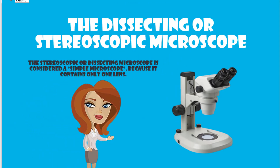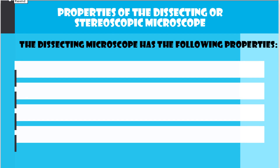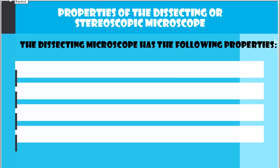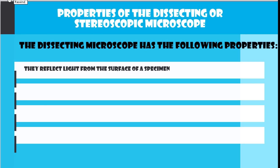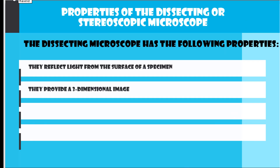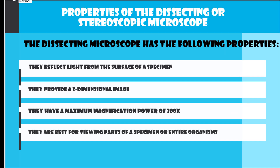The stereoscopic or dissecting microscope is considered a simple microscope because it contains only one lens. Properties of the dissecting or stereoscopic microscope are: they reflect light from the surface of a specimen, they provide a three-dimensional image, they have a maximum magnification power of 300x, and they are best for viewing parts of a specimen or entire organisms.